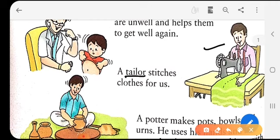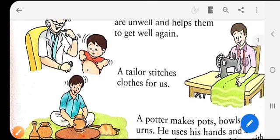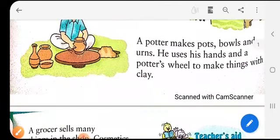In the next figure, you can see a man making some potteries. He is making a pot, some bowls, and many more things with clay. Who is he? He is a potter. His occupation is to make pots, bowls, and urns. Urns means utensils — bartan.